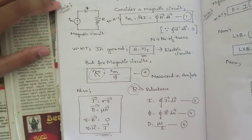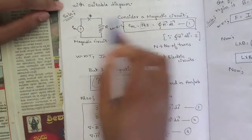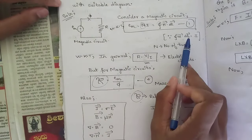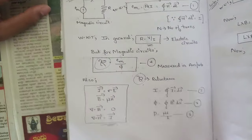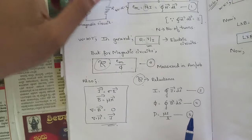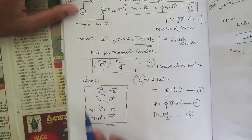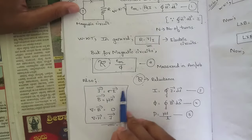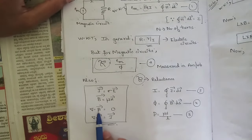It is measured in amperes per weber, and R in this case is called reluctance. This is the magnetic circuit and the required equation obtained from Ampere's law involves the number of turns and reluctance. For magnetic circuits, there are a few more equations to note: J equals sigma times E, B equals mu times H, del dot B equals zero.